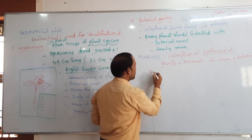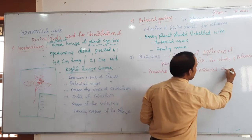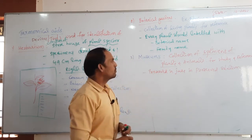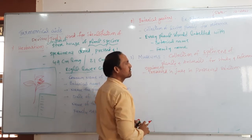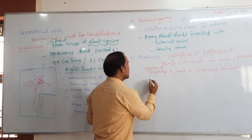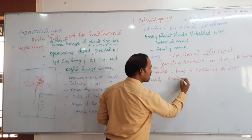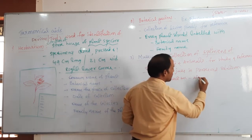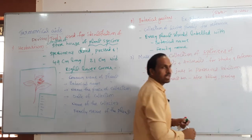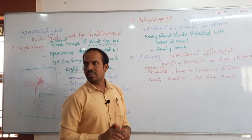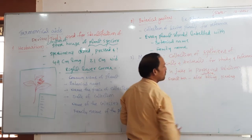In museums, specimens are preserved in jars or boxes in preservative solution. Insects are preserved in insect boxes after catching, killing, and pinning. Large animals are preserved by stuffing.